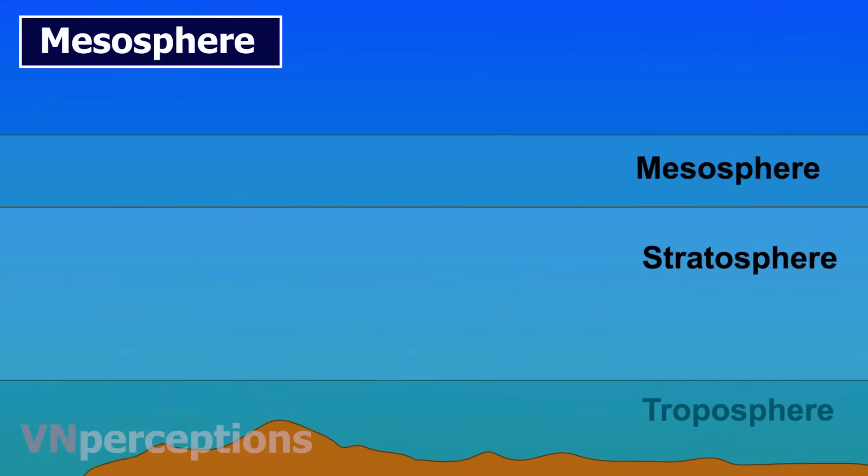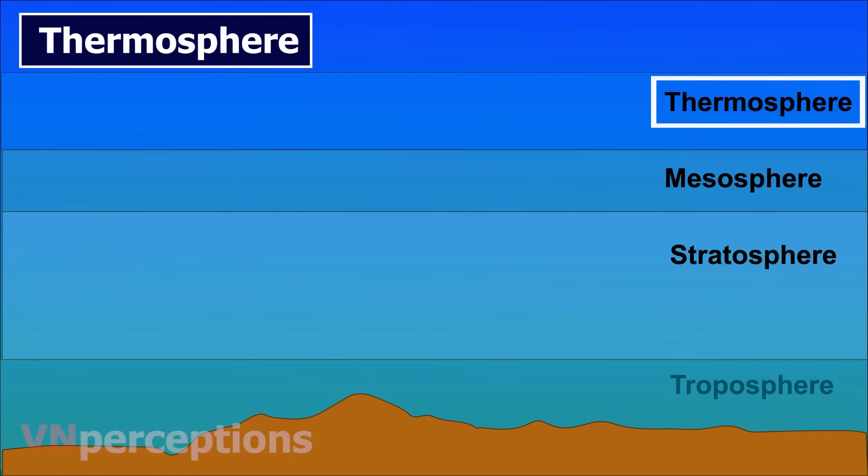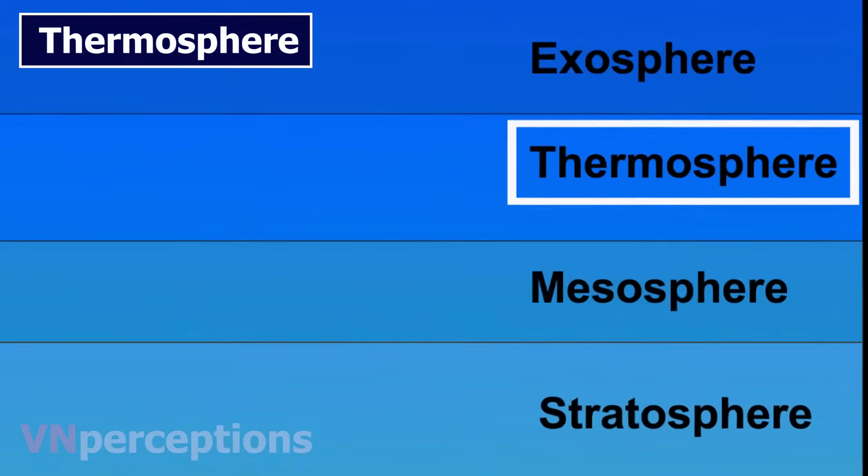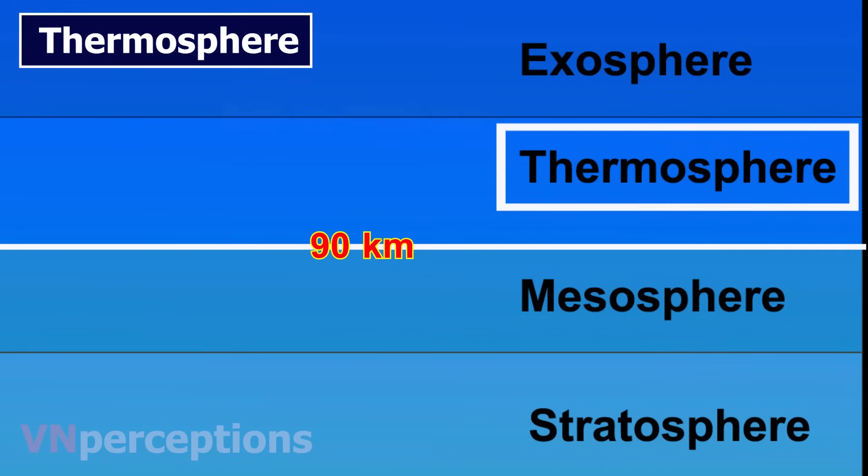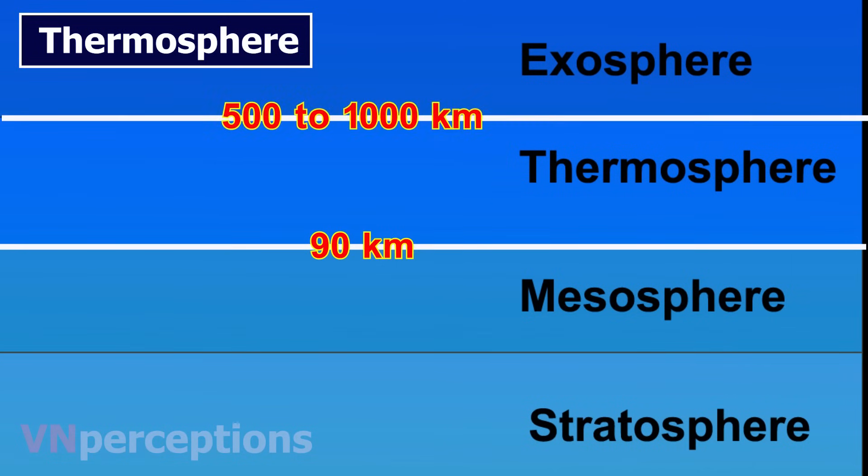Then comes the thermosphere. The thermosphere is directly above the mesosphere and below the exosphere. It extends from about 90 kilometers to between 500 to 1000 kilometers above our planet. Temperatures climb sharply in the lower thermosphere, then level off and hold fairly steady with increasing altitude.